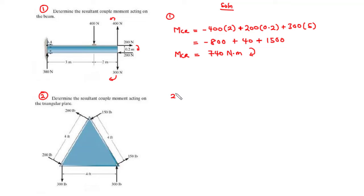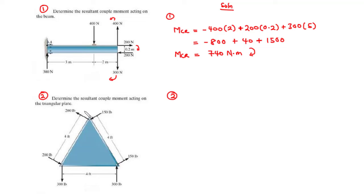Let's move on to question two — determining the resultant couple moment acting on the triangular plate. We have three couples here. Wherever we see pounds, we change to newtons, and wherever we see feet, we change to meters.